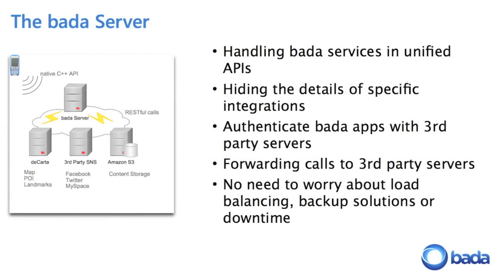The picture shows you how the server infrastructure is deployed. On the top side you have the Bada server, which acts as a mediator talking to third-party servers. We have signed legal contracts with third-party providers to ensure we have the right to access their servers and write credentials and user information. For example, we can access the Decata server to get map information, points of interest, and landmarks. We can also access third-party social network services like Facebook — you can authenticate your application with Facebook via the Samsung server. You don't need to use XML or HTTP calls; it can all be done via the native C++ API. We can also access Twitter and MySpace.